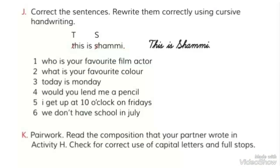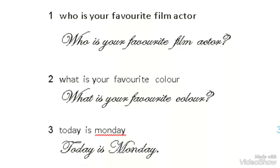F: Correct the sentences. Rewrite them correctly using cursive handwriting. Dear students, cursive handwriting means you have to write in a way that the letters are joined together. Here's an example. Number 1: Who is your favorite film actor? The fault in this sentence lies in the capitalization and punctuation. In English, sentences typically begin with a capital letter. Also, there should be a question mark at the end to indicate the sentence is interrogative. The corrected version is: Who is your favorite film actor?